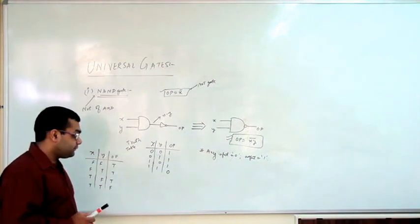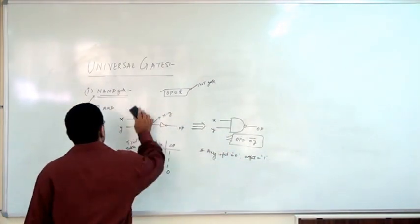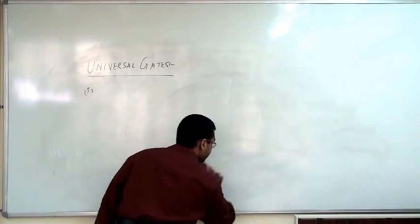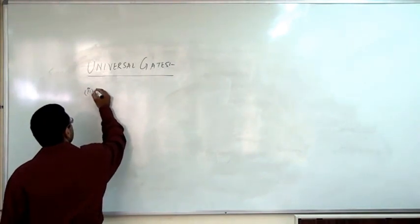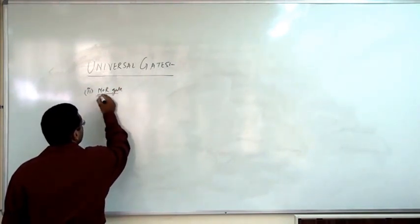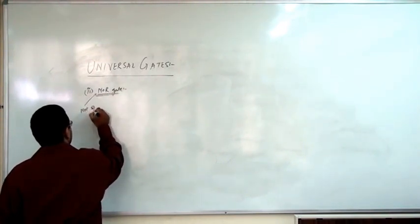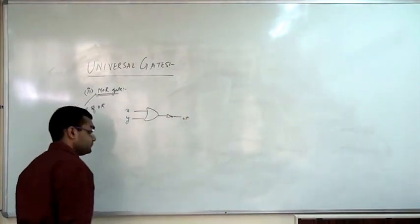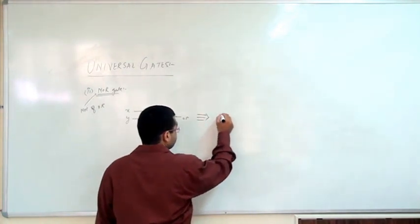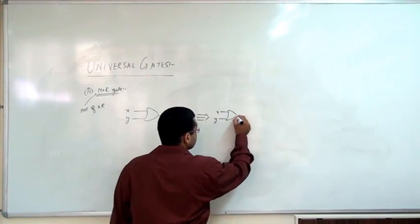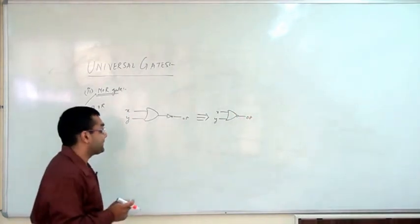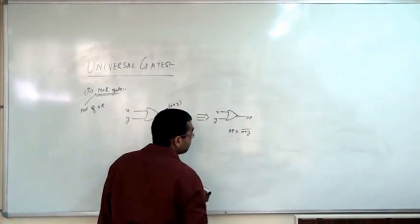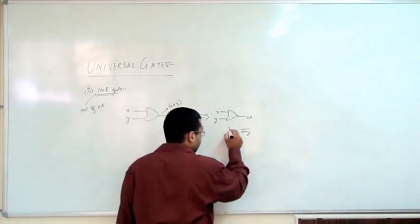Moving on, we are done with the NAND gate. Next we talk about the next universal gate, that is the NOR gate. NOR actually stands for NOT of OR. So we have a NOR gate and you put in a NOT, so we have x plus y coming in and then inverted, so our output comes out to be x plus y whole bar. Simple and straightforward.